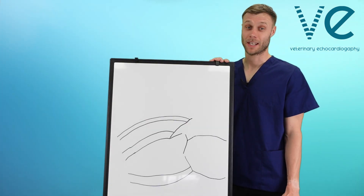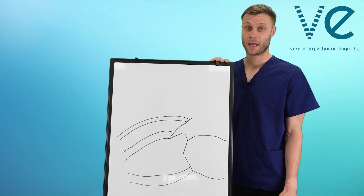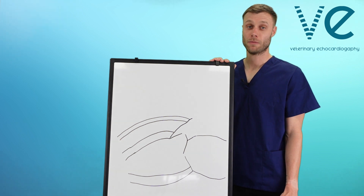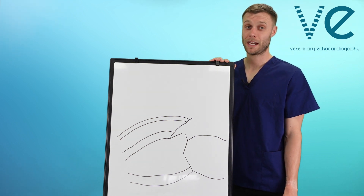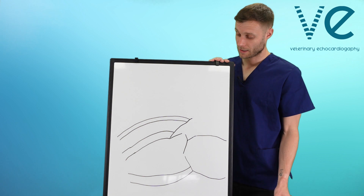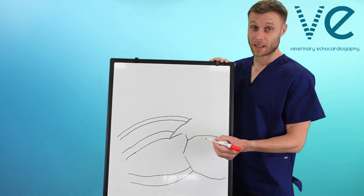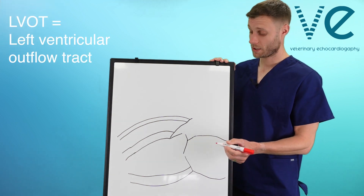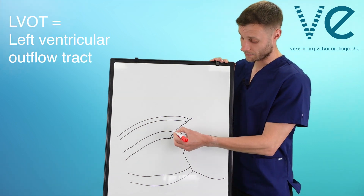There are four types of VSDs. In this video, we are going to focus on the most common type of VSD, a perimembranous VSD. This is located in the LVOT, just proximal to the aortic valve.